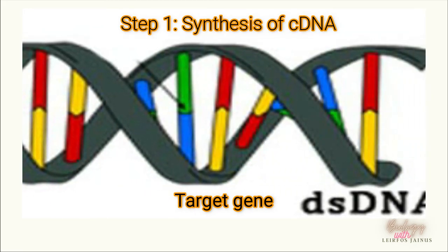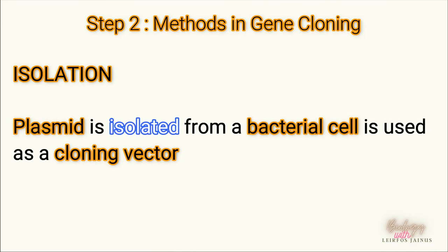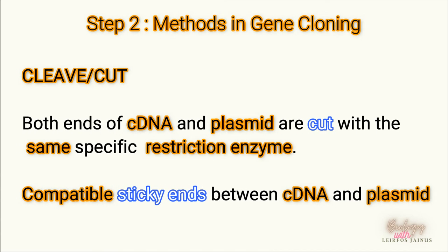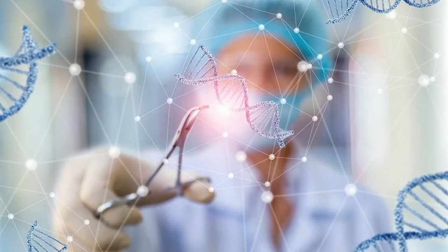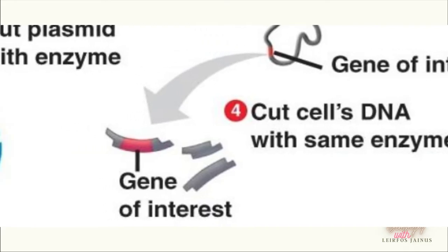After we have the target gene, we move on to the second step: incorporating the cDNA into the cloning vector. Using the methods of gene cloning, the first step is isolation — we already have the cDNA as our target gene, so now we need to isolate the plasmid from the bacterial cell. The second step is cleave or cut — we cut both the cDNA and plasmid with the same restriction enzyme to ensure they have compatible or complementary sticky ends.